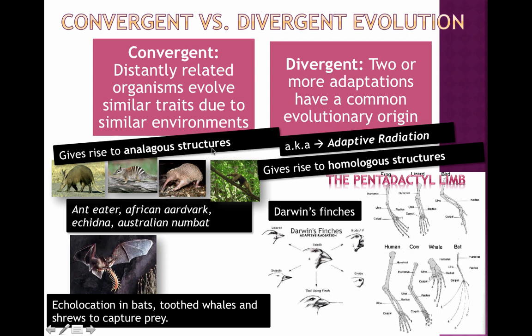Analogous structures are contrasted with homologous structures, which originate from the same evolutionary source. For example, these four animals — the anteater, African aardvark, echidna, and Australian numbat — all have similar long-shaped snouts for acquiring food due to similar environments. But if you look at their evolutionary origins, you'll find that they are very, very different.